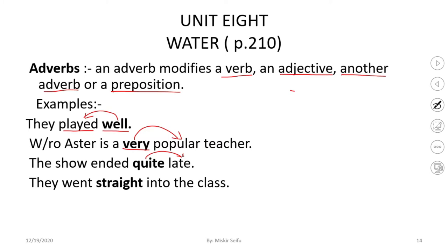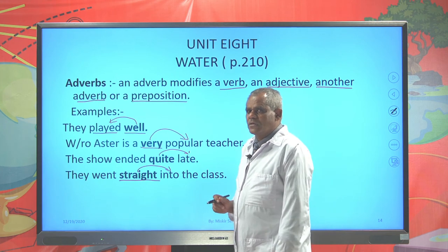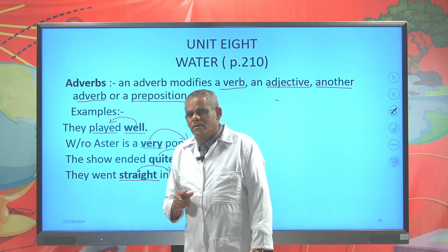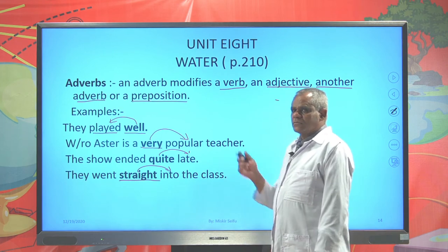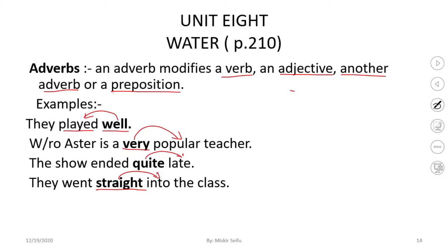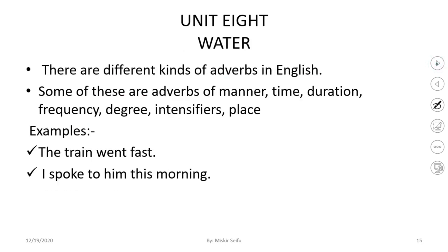And finally: 'They went straight into the class.' Straight is an adverb, whereas into is a preposition. These are the common and basic functions of an adverb at your level. If you like to remember what you learned in the previous grade level, you can revise it — about manner, state, frequency, time, etc. There are different kinds of adverbs in English.